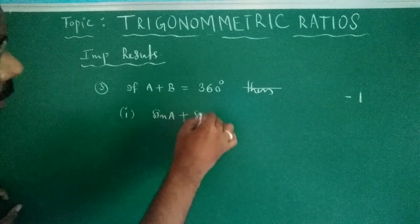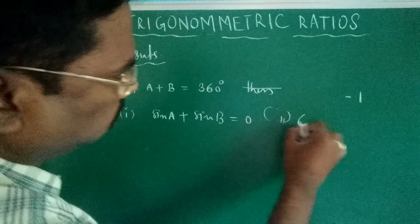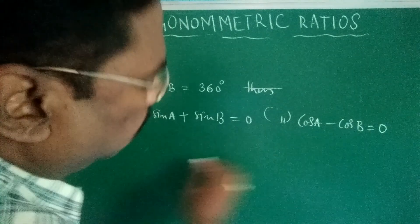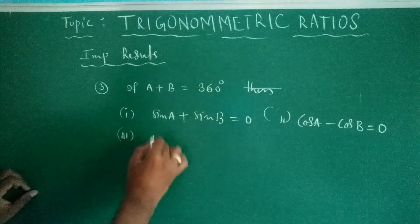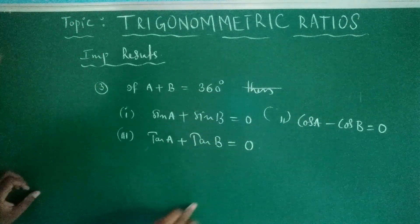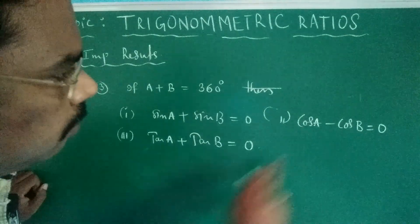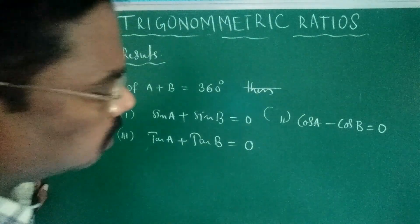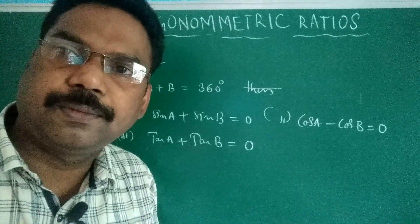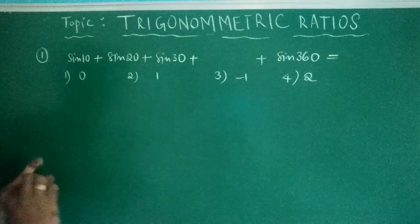If a plus b is equal to 360 degrees, then: (1) sin a + sin b = 0, (2) cos a − cos b = 0, (3) tan a + tan b = 0. Now the first problem: sin 10° + sin 20° + sin 30° + ... + sin 360° is equal to?